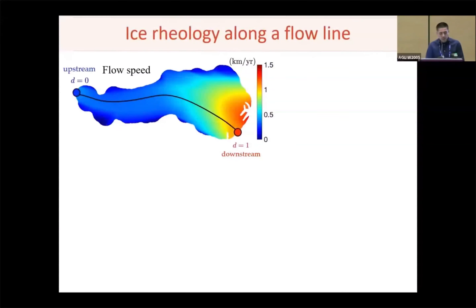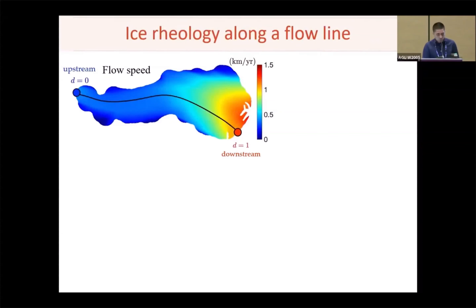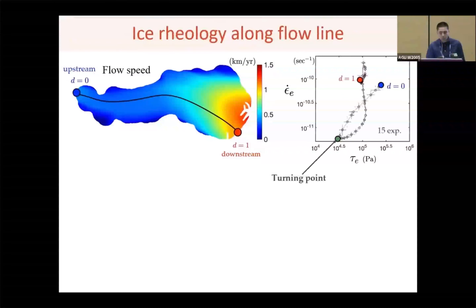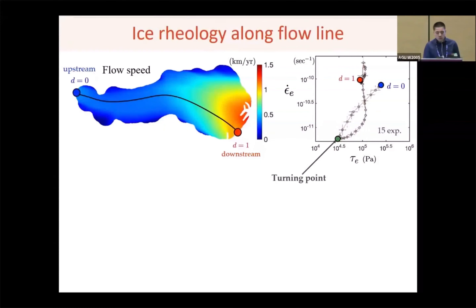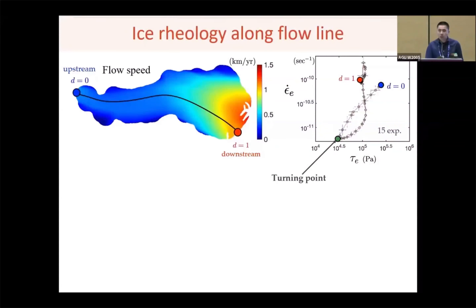To better understand how ice rheology evolves through the ice shelf, we decided to check the stress-strain relations along a single flow line linking from upstream to downstream. We see that following the streamlines, the relation first follows a power law of two to three, and then gradually turns into a vertical line. What determines this turning point becomes a critical problem.